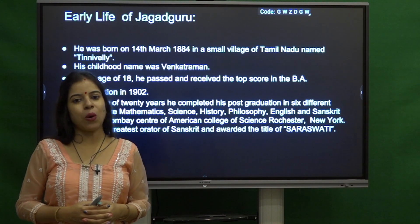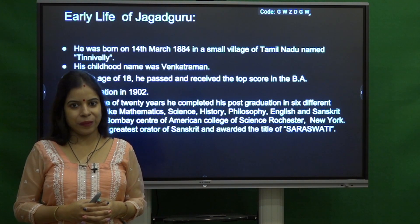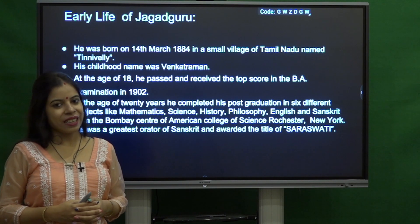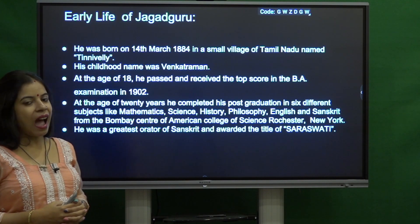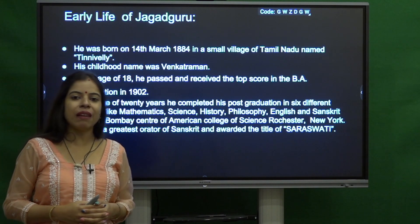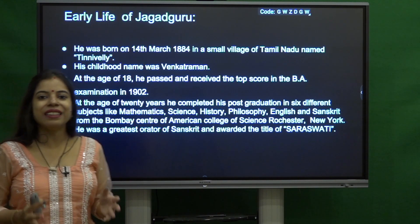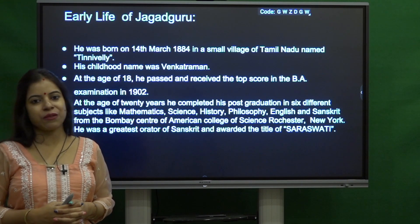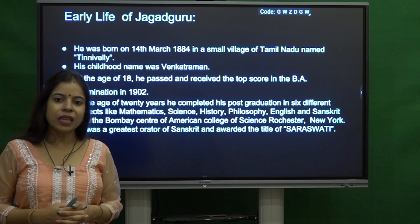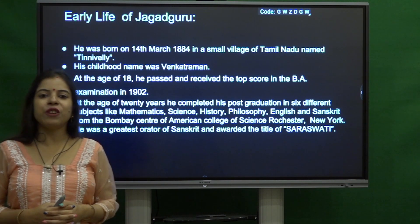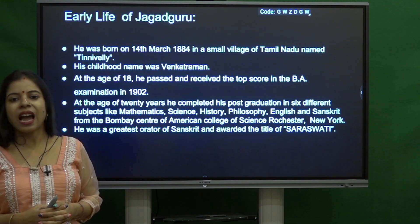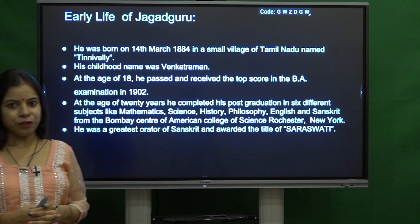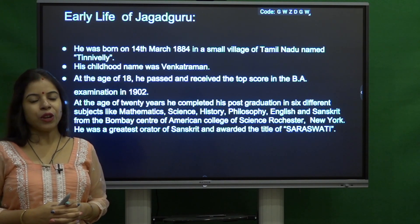His childhood name was Venkate Raman. In 1902, at the age of 18, he passed and topped in the BA examination. At the age of 20, he completed his masters in six different subjects — English, Sanskrit, Philosophy, History, Science and Mathematics — from the Bombay Center of American College of Proshto, New York.